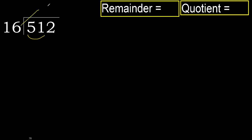16 multiplied by which number is nearest to 51 but not greater? 16 multiplied by 4 is greater. Multiplied by 3 is 48. 48 is not greater. 51 minus 48 is 3.